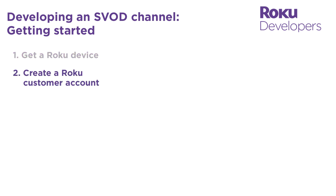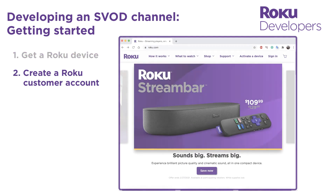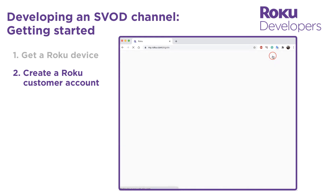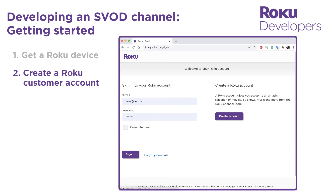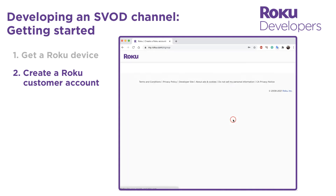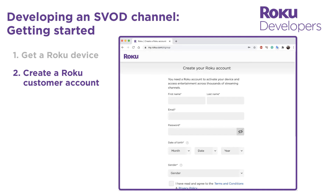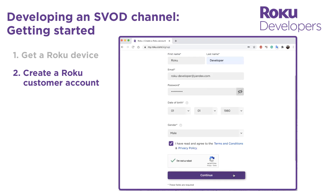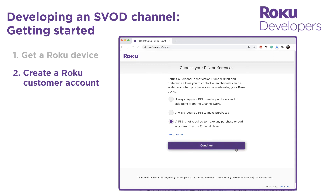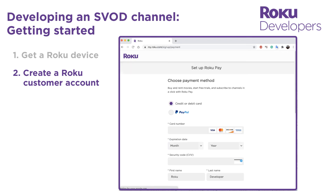Next, you need to create a Roku customer account. Go to Roku.com, click Sign In, and then click Create Account. From here you enter your personal information and login credentials, then click Continue. You can enter a PIN and add a payment method now or later.